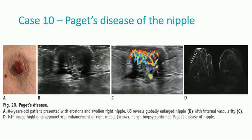Paget's disease in a patient that presented with erosions and swollen right nipple. Ultrasound reveals a globally enlarged nipple with internal vascularity and the typical asymmetrical enhancement on MRI. The punch biopsy confirmed Paget's disease of the nipple.